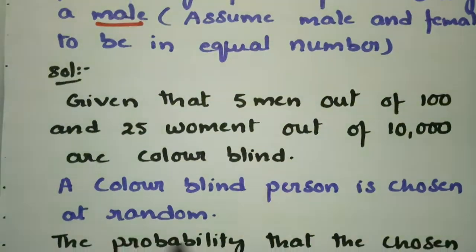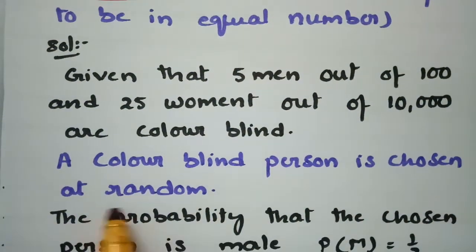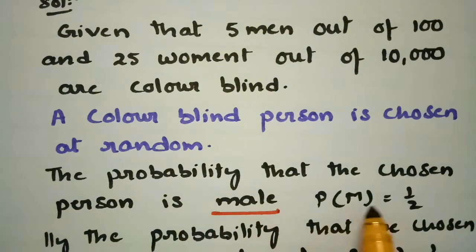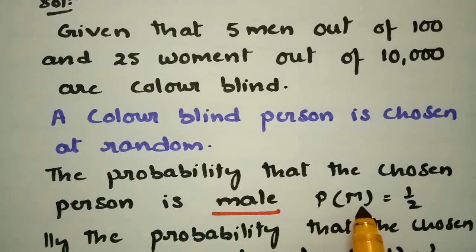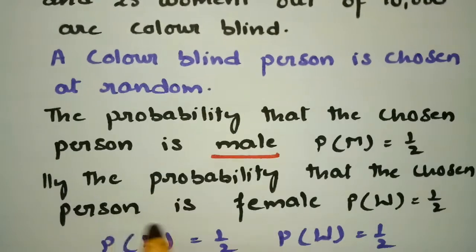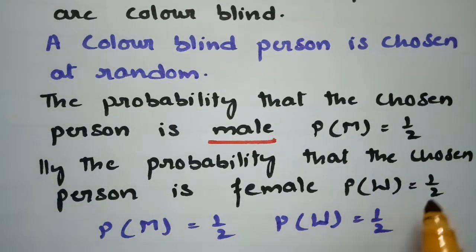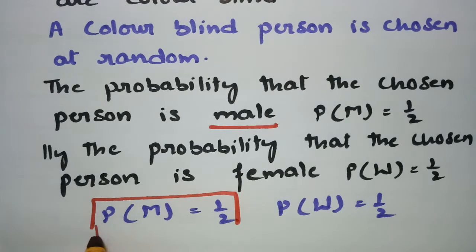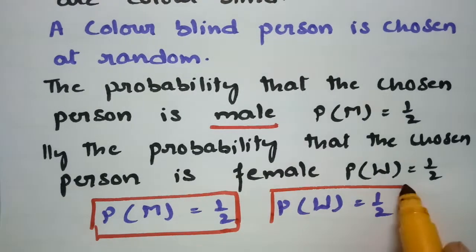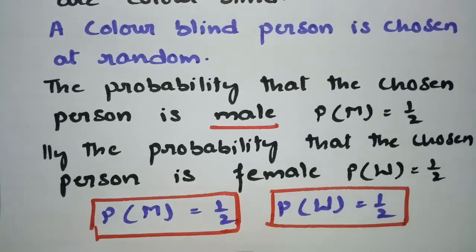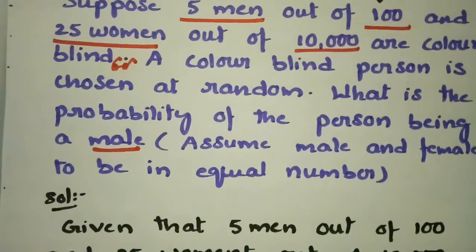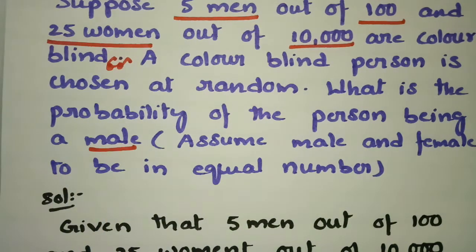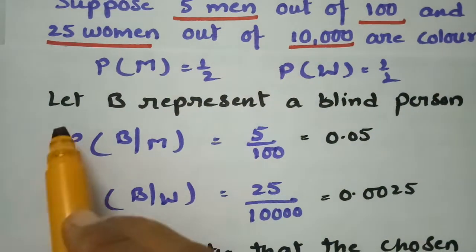A colorblind person is chosen at random. Since males and females are in equal number, the probability that the chosen person is male is one-half, and the probability that the chosen person is female is also one-half.